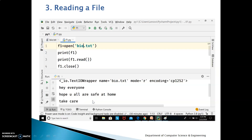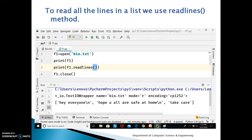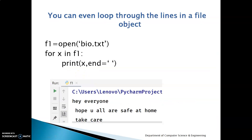When you want all the contents of your file in the form of a list, you use the readlines() method — note the extra 's'. You create a file handle, print the file handle, and then do f1.readlines(). A list is created from the file contents, and then you close the file. You can also loop through the lines in a file object: f1 equal to open(), then for x in f1: print(x, end=' '). This prints each line one by one with a space separator.